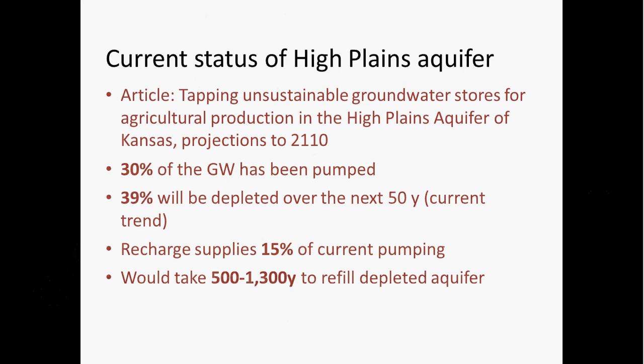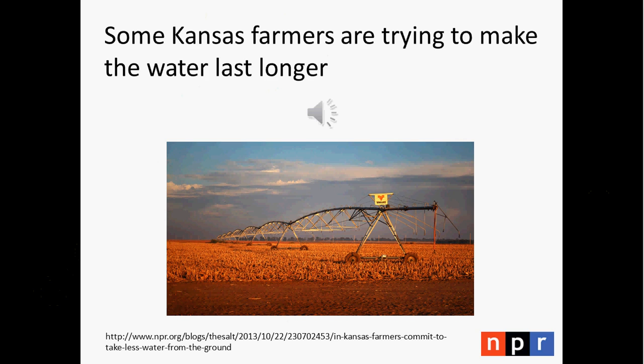They estimate it would take about 500 to 1,500 years to refill the depleted aquifer. These numbers are not pretty. Western Kansas and much of the High Plains relies heavily on agriculture — that's the basis of the local economies there. Because this agriculture is currently buoyed up by groundwater from the High Plains aquifer, something has to change or those economies are going to be severely impacted as the aquifer depletes. Some farmers in Kansas are trying to be proactive and are working together to help extend the life of the aquifer. Let's listen to this story by National Public Radio about their effort.